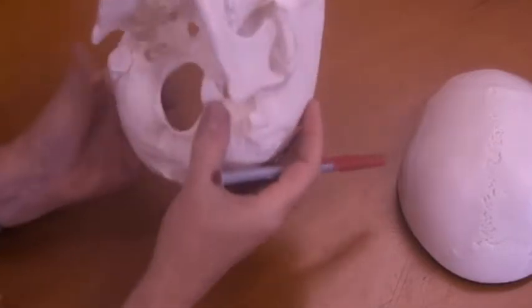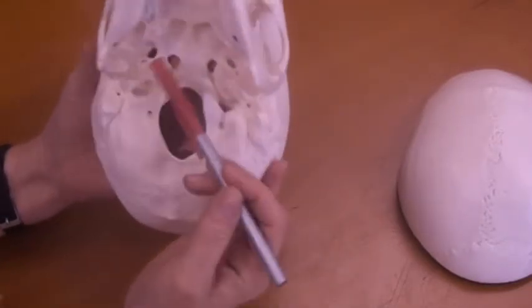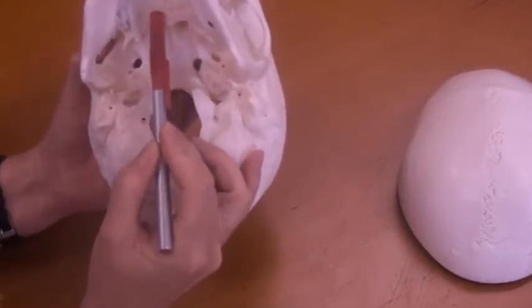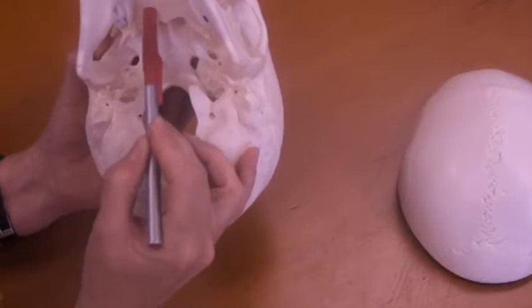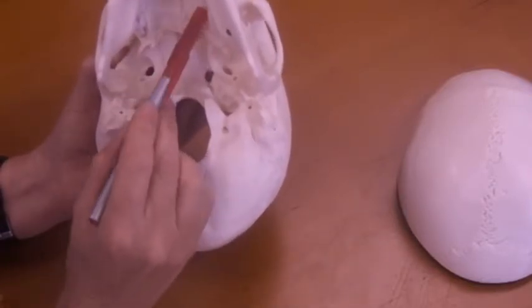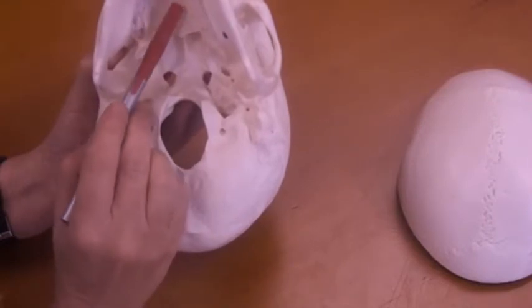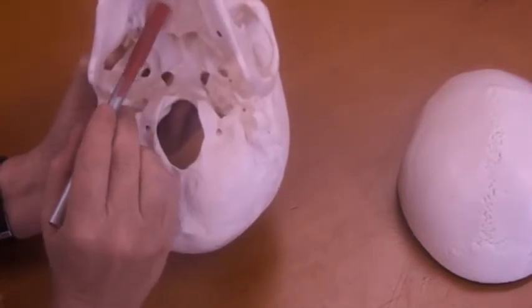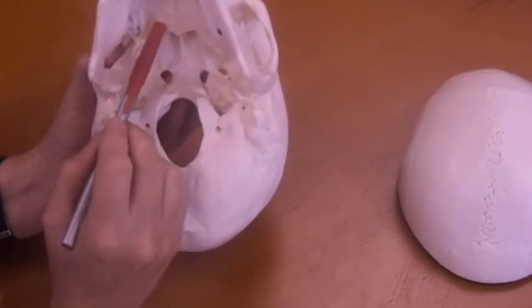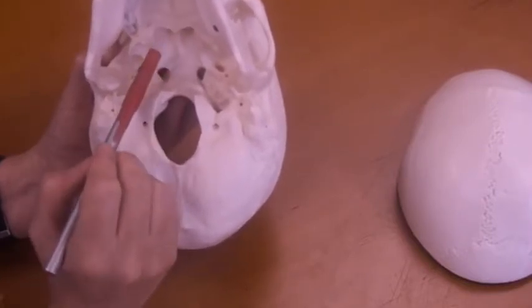And two palatine bones, which if we look again at the hard palate, they're going to form the posterior aspect of the hard palate. So if you're putting things together, the hard palate is formed by the palatine process of the maxilla and the palatine bones more posteriorly.